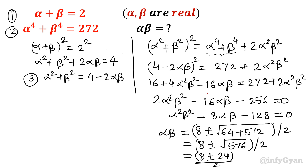The square root of 576 is 24. So alpha beta equals 8 plus or minus 24, divided by 2. Taking the plus sign: 8 plus 24 is 32 over 2, giving 16. Taking the minus sign: 8 minus 24 is negative 16 over 2, giving negative 8. So there are basically two values: alpha beta equals 16 or alpha beta equals negative 8.